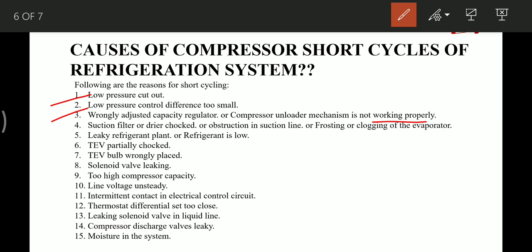Then we have suction filter or dryer choked, or obstruction in the suction line, or frosting or clogging in the evaporator. These are the reasons that can lead to short cycling. Then we have leaky refrigerant plant or refrigerant in the system is low. Then the thermal expansion valve is partially choked or its bulb is wrongly placed.